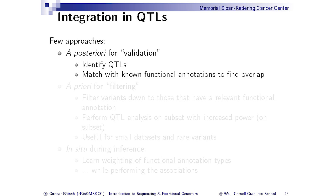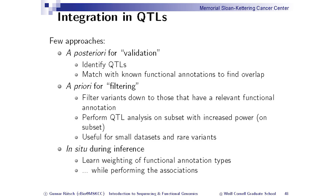A priori, you could use functional annotation as a filtering technique: keep only variants that overlap with a binding site, a motif, or some functional region where you can explain why a SNP would matter there. You remove all other variants before performing your QTL. This gives you increased power because you've gotten rid of 90% of SNPs and need a smaller sample size. This technique is particularly useful if you have a small sample size or if you have rare variants you'd like to understand.